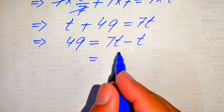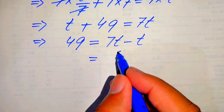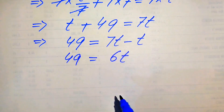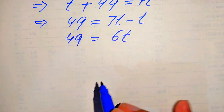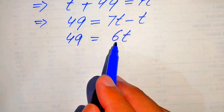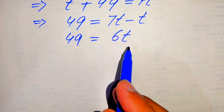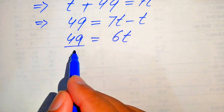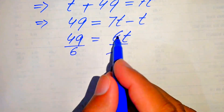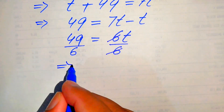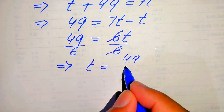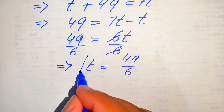From here we have 7t minus t equals 49, so 6t equals 49. Because we are solving for t, we divide both sides by 6. This 6 is cancelled out by this 6 and finally we have the value of t equals 49 over 6.